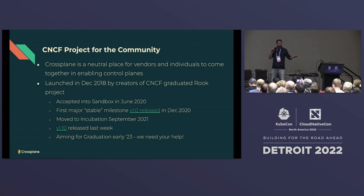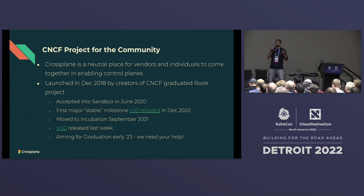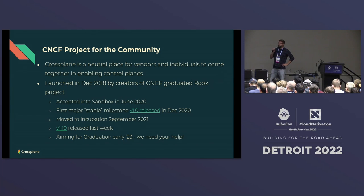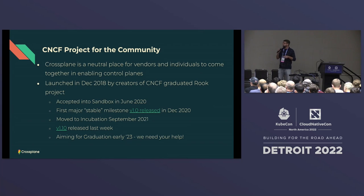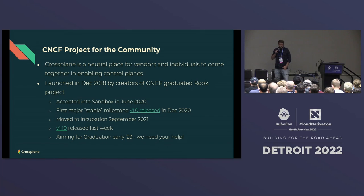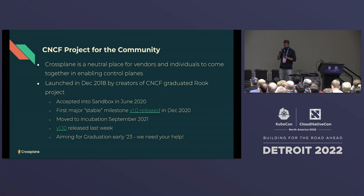This is a CNCF project — a community project and a neutral place for people to come together to enable and move forward control planes. We first open sourced it in late 2018. We are the same folks that created the Rook project, storage orchestration for Kubernetes. We donated it to the CNCF at the sandbox level in mid-2020, reached our first V1 stable milestone by end of 2020, declared it ready for production usage, and reached incubation level by late 2021. We just released V1.10, and we're aiming for full CNCF graduation in early 2023.